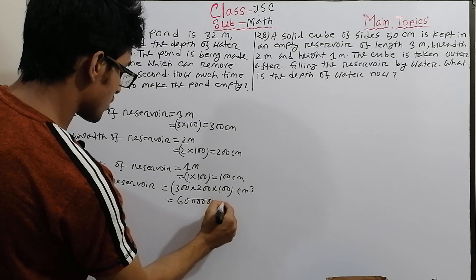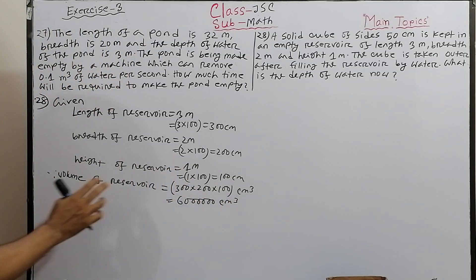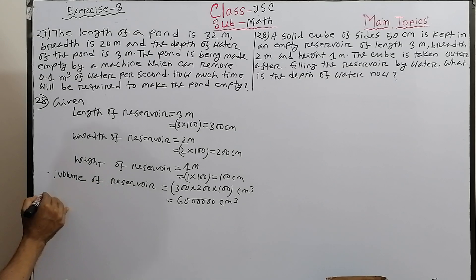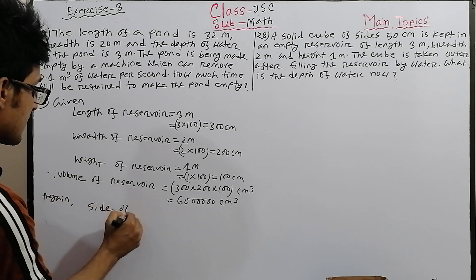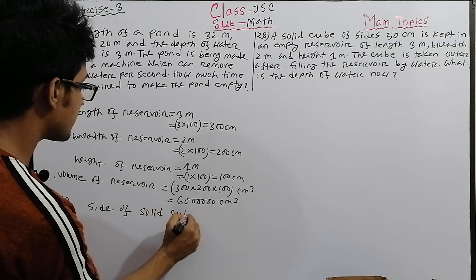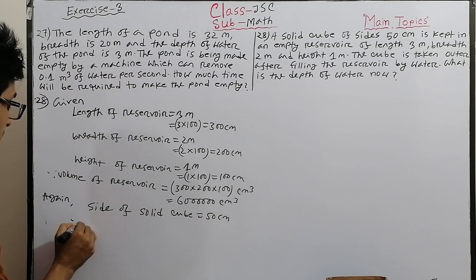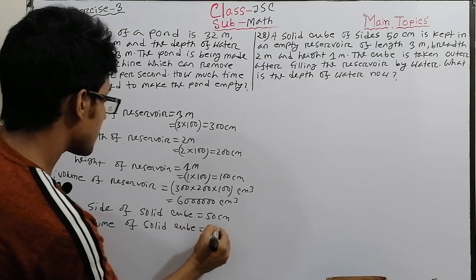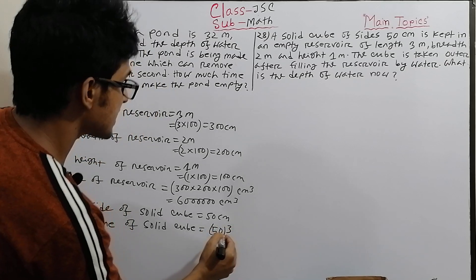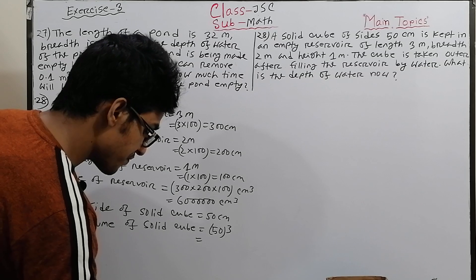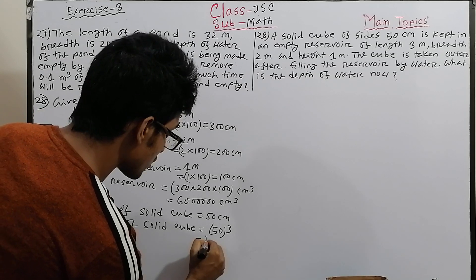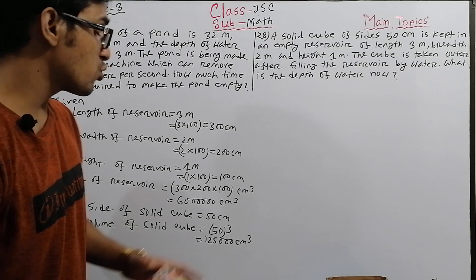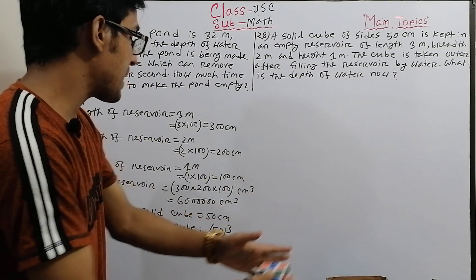The volume of the reservoir is 300 into 200 into 100, which equals 6,000,000 cubic centimeters. Now the volume of the solid cube: side is 50 centimeters, so volume equals 50 by 50 by 50. Calculating: 50 cubed equals 125,000 cubic centimeters.